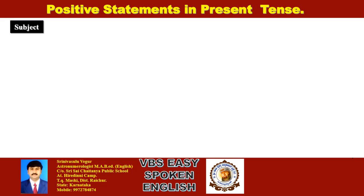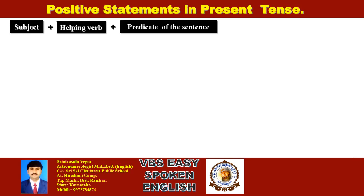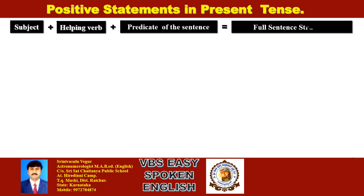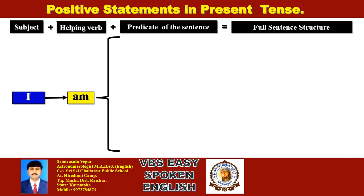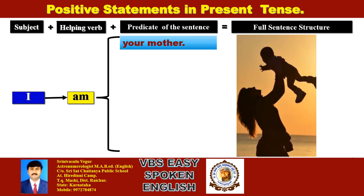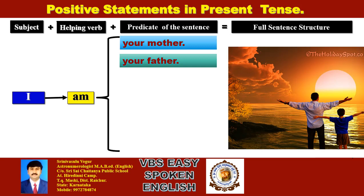The structure is: Subject plus helping verb plus predicate of the sentence. Subject 'I' plus helping verb 'I am', followed by the predicate. For example: I am your mother. I am your father.